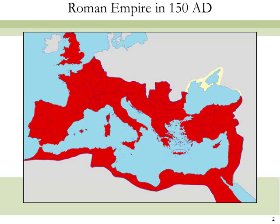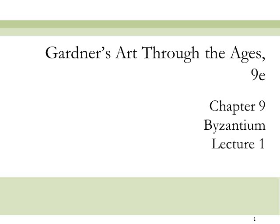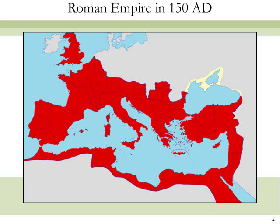This is Lecture 1 for Chapter 9, Byzantium. I want to begin by doing a quick review of the rise and fall of the Roman Empire. First governed by kings, then as a senatorial republic called the Roman Republic, Rome finally became an empire at the end of the 1st century BC under Augustus and his authoritarian successors.